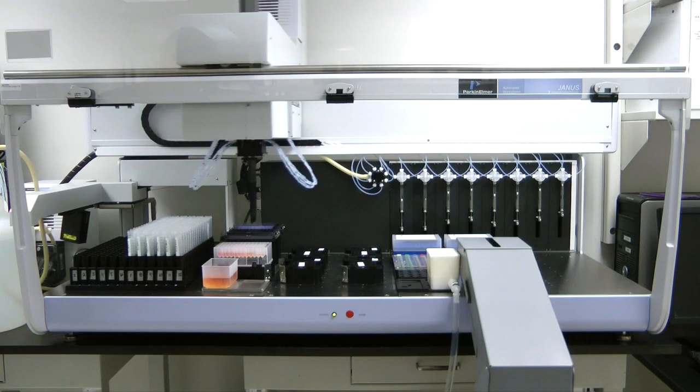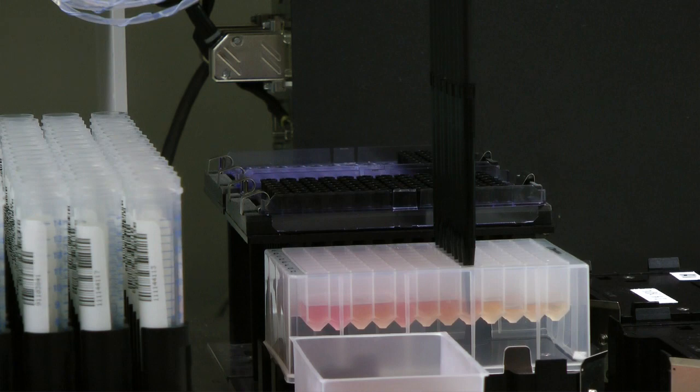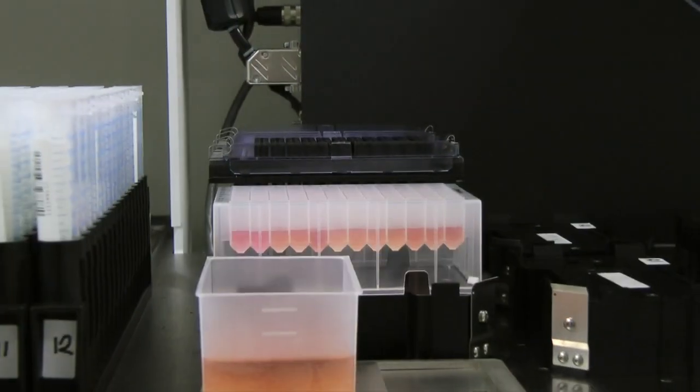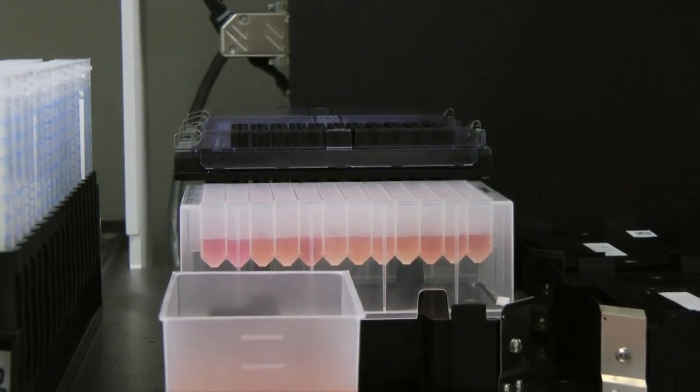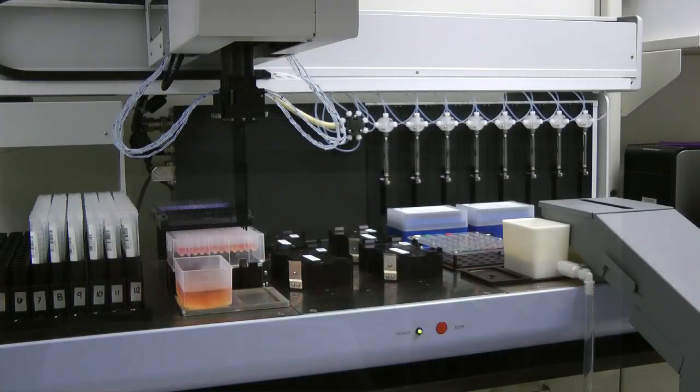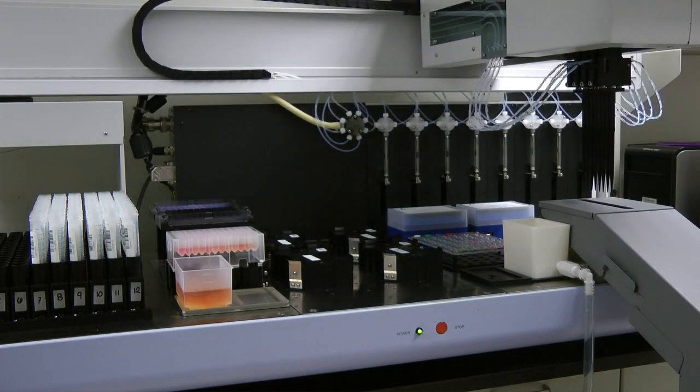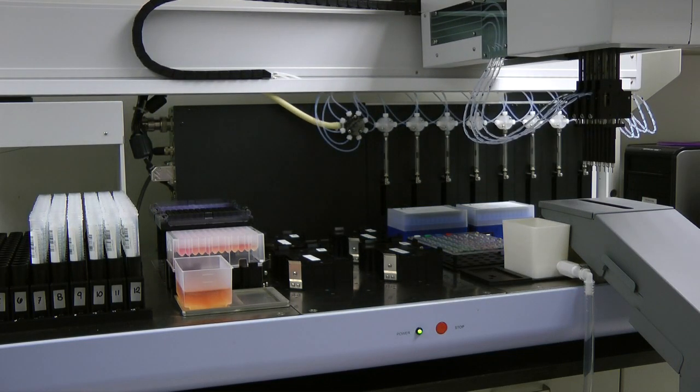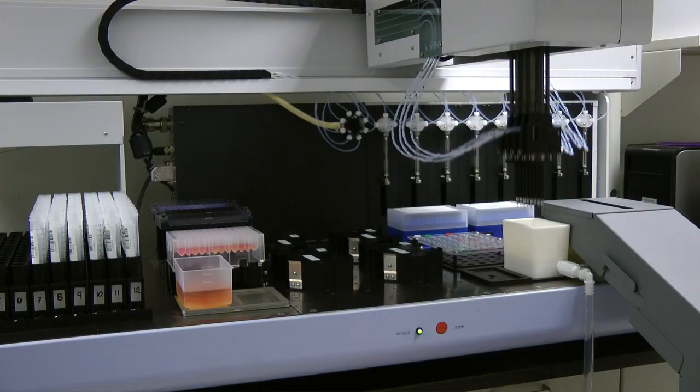and dispense PBMCs for each sample into its corresponding position in the deep well plate. The dilutions are now complete and each sample has now been standardized to 2.5 million PBMCs per milliliter. The Janus completes 96 cell dilutions in a matter of minutes. The final cell suspensions are ready for plating.